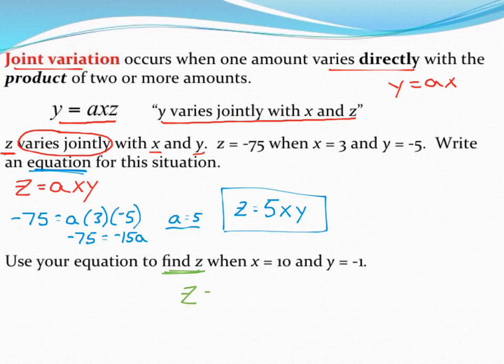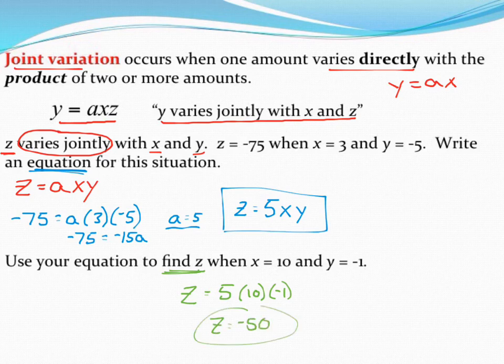So in this case, z is what we want to find. We know the constant of variation. They're asking us to find this when x is equal to 10 and when y is equal to negative 1. So multiplying all those together gets me a z value of negative 50 for step 2.